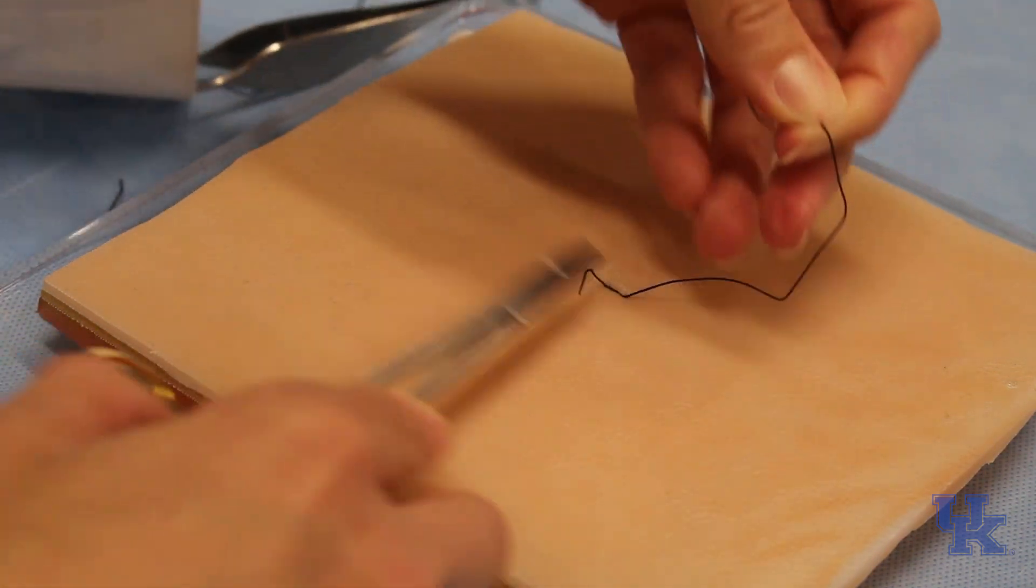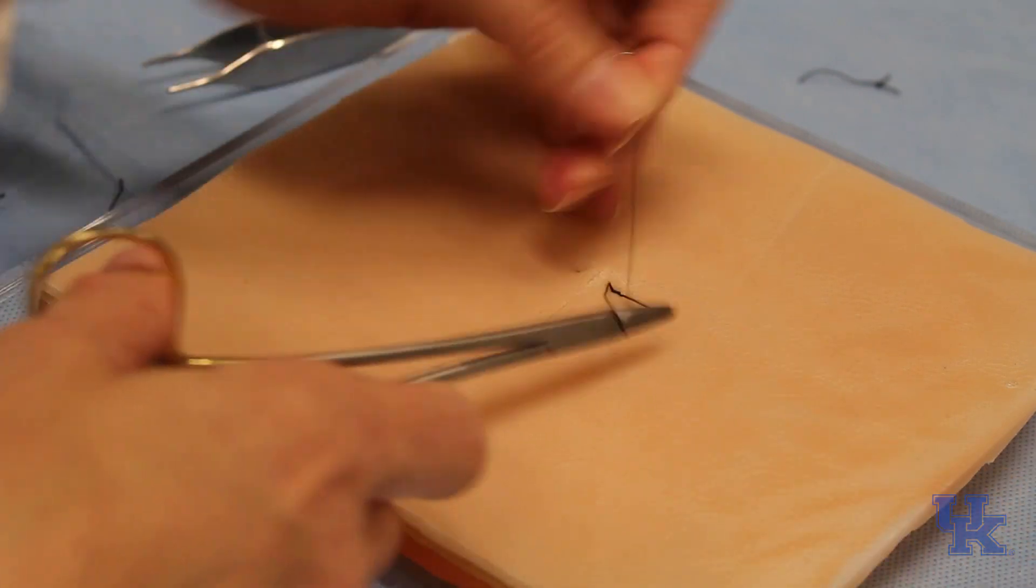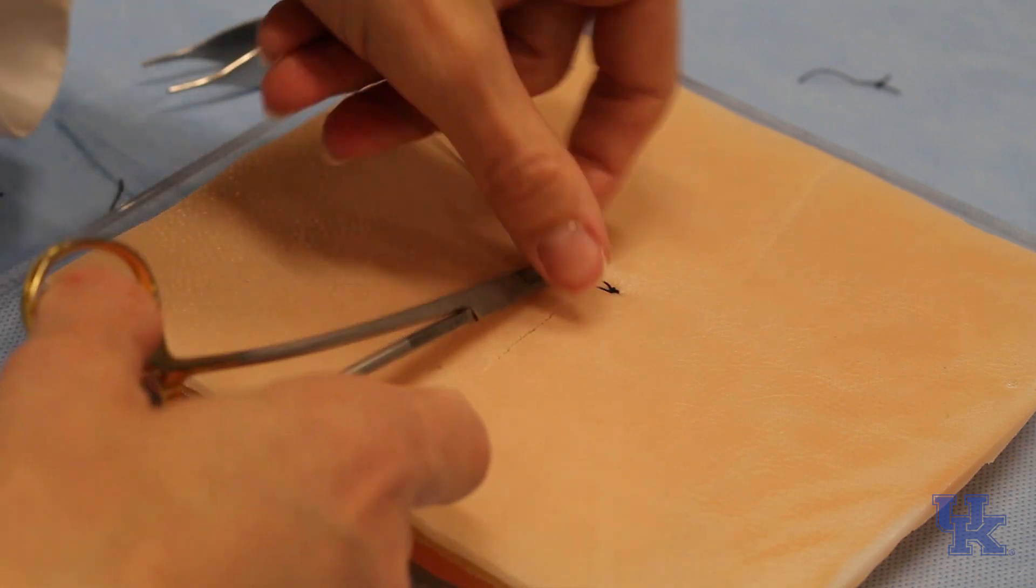And once again this also can help to evert those skin edges. So that is a vertical mattress suture.